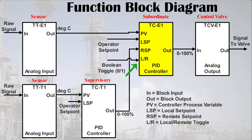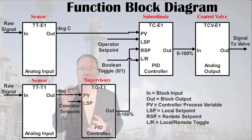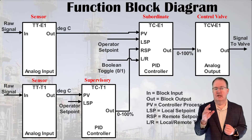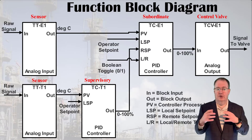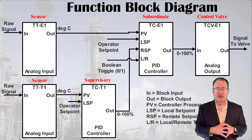On TCE1, there's another input which allows it to be toggled between local mode (L), where it ignores the supervisor, and remote or cascade mode (R). A Boolean toggle just means 1 or 0, on or off. We'll be using the FBD often — see more examples in the text. Also in the text, see another good cascade design example for reflux control of a distillation column. Do the cascade exercises at the end of the chapter to get used to this commonly used technique.